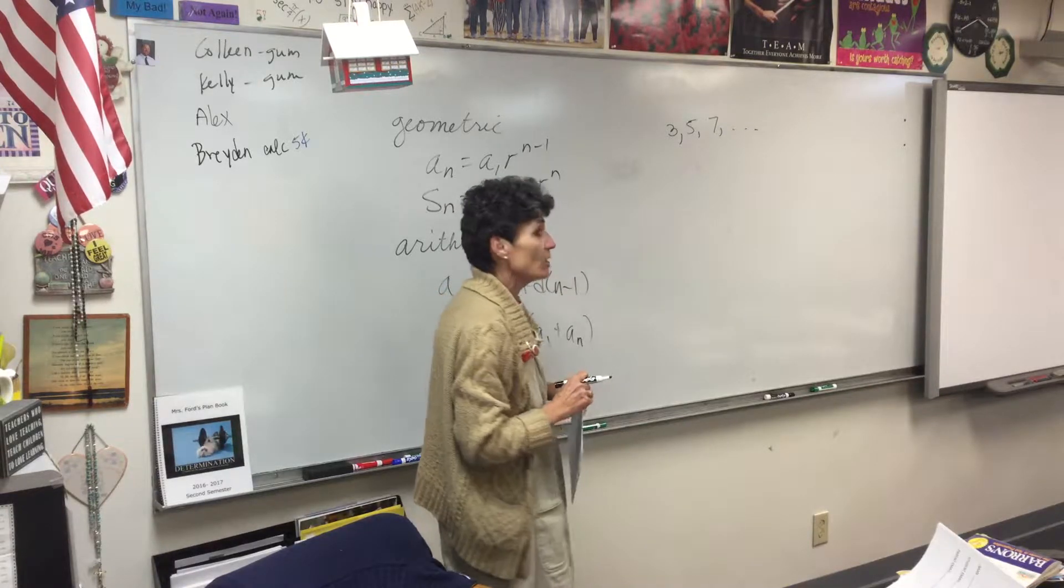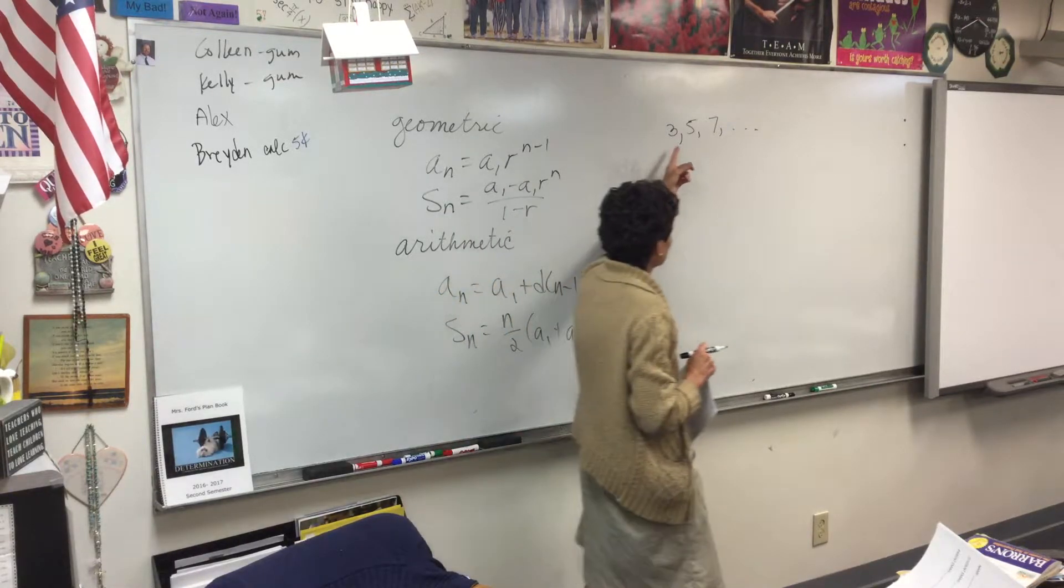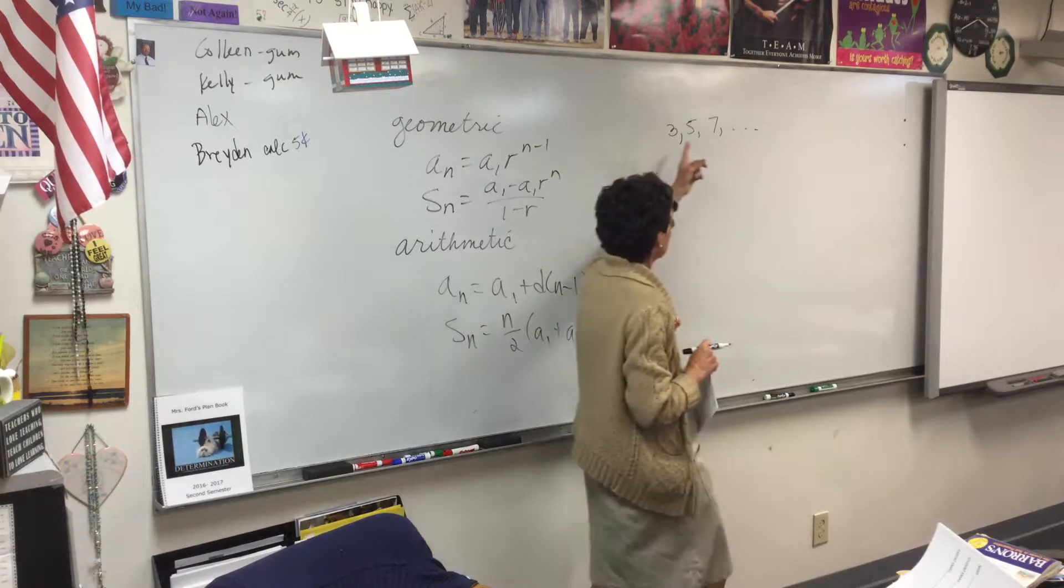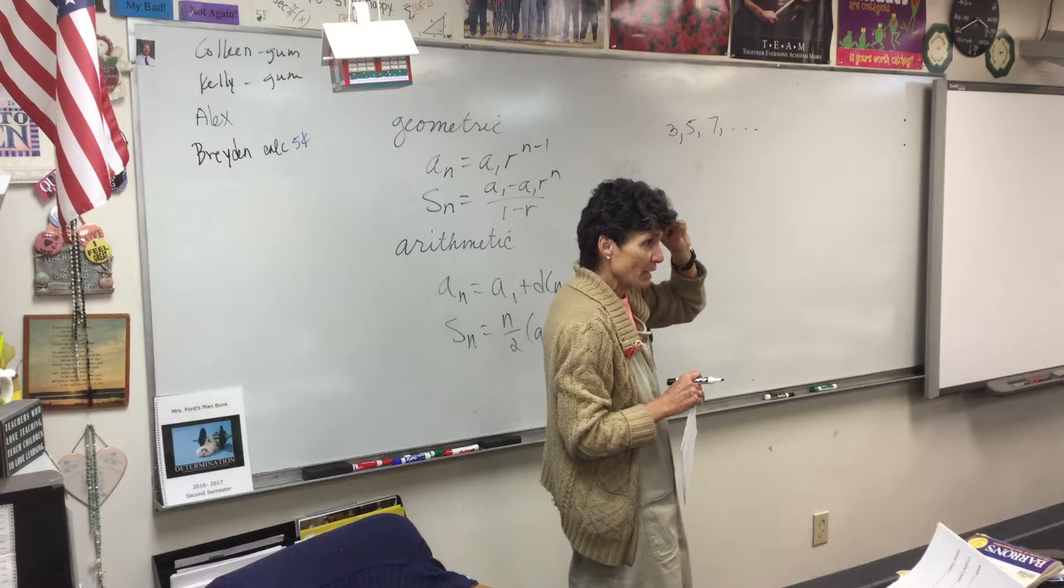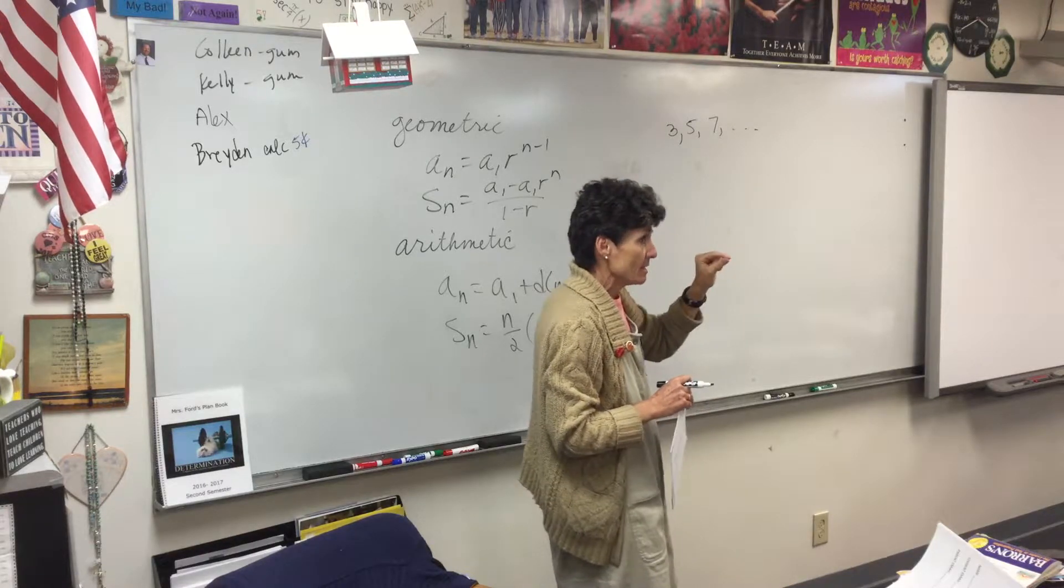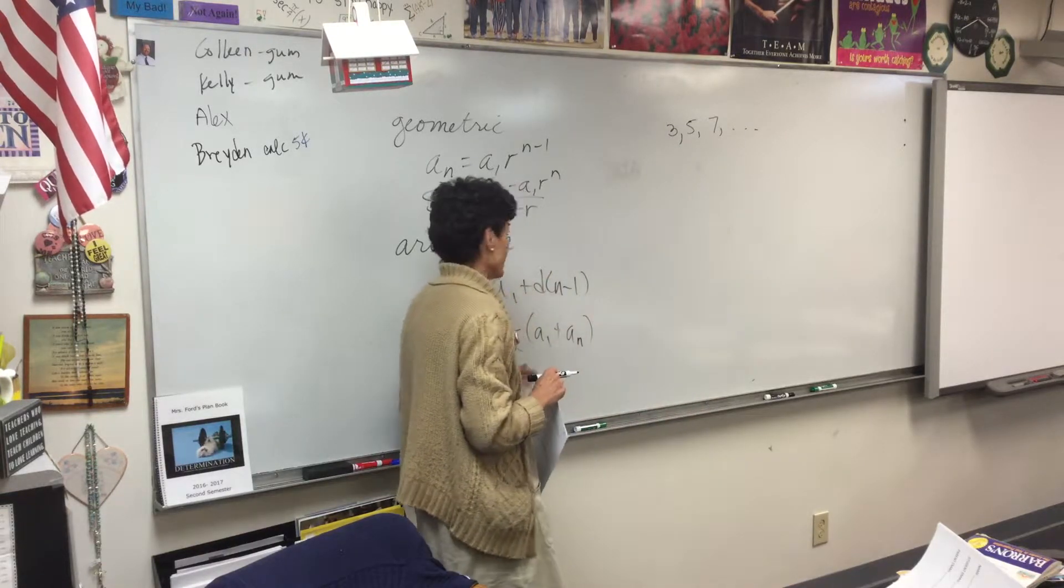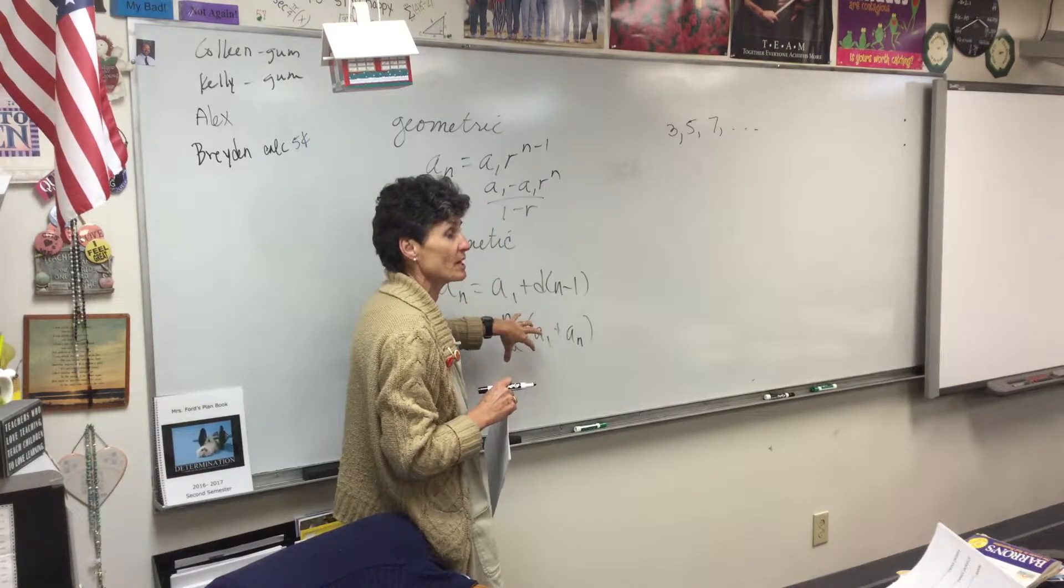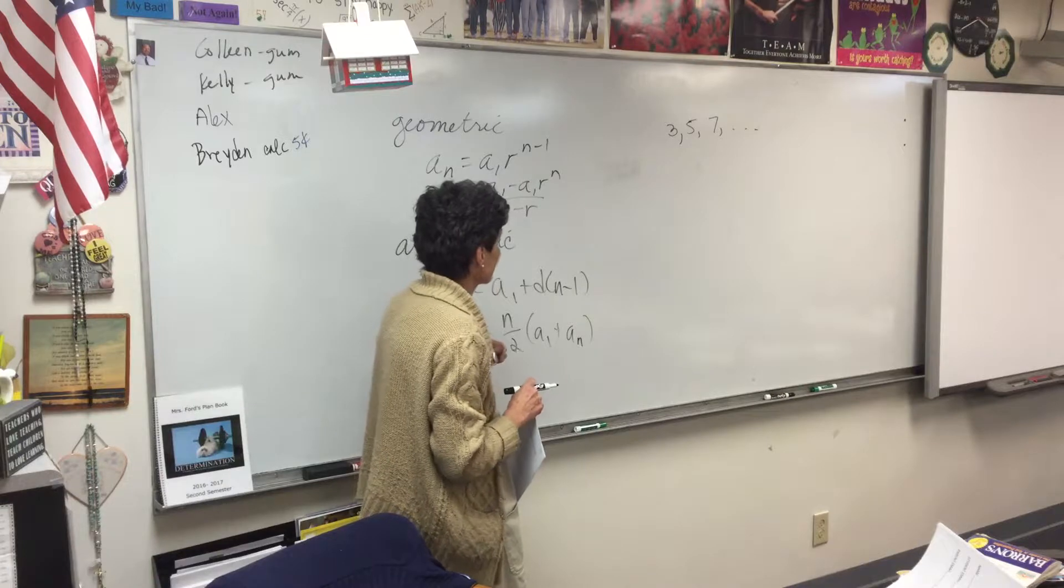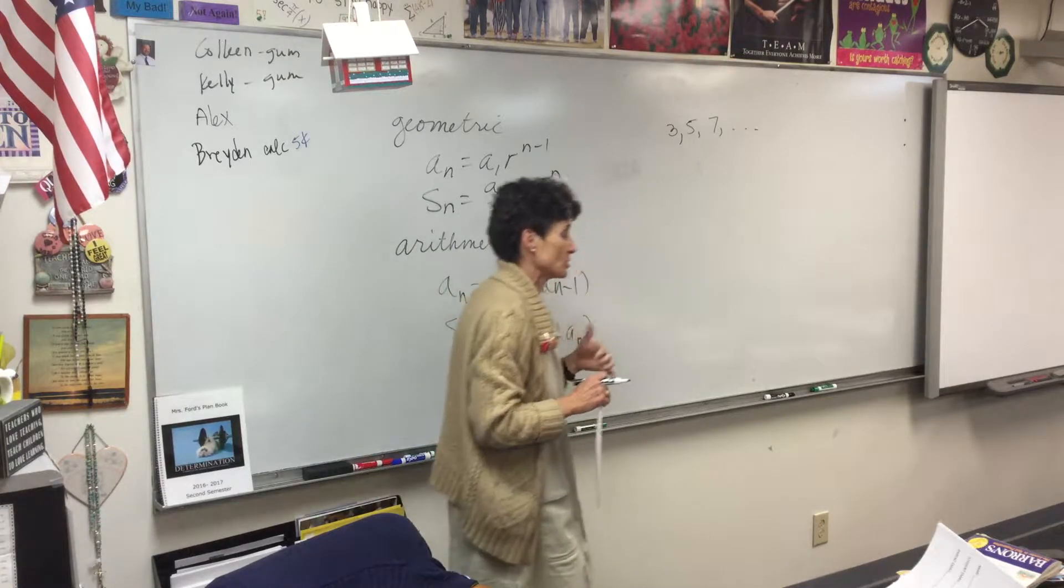Arithmetic. Yep, it's arithmetic, which means we're getting from term to term by adding. And what are we adding? Two. Two. Okay, now remember, you've got to be adding the same thing. If you're going to use these formulas, you have to be getting from term to term by adding the very same thing or multiplying by the very same thing. Okay, then what's the second question?